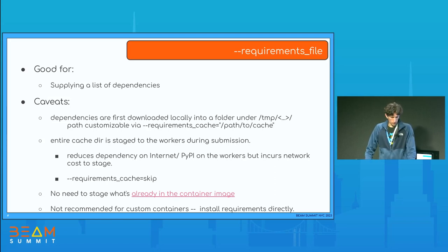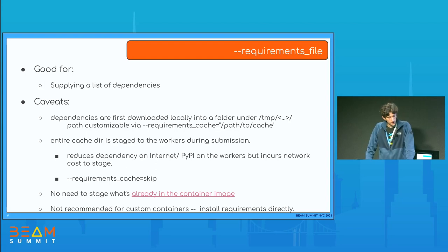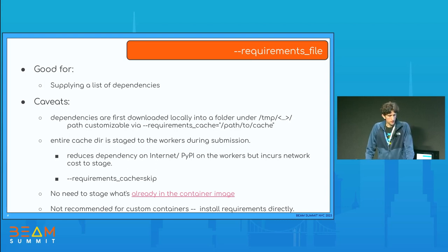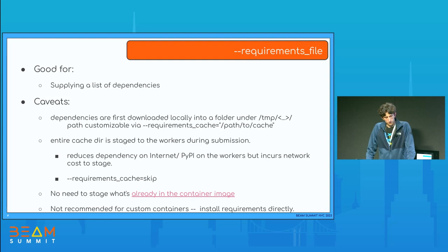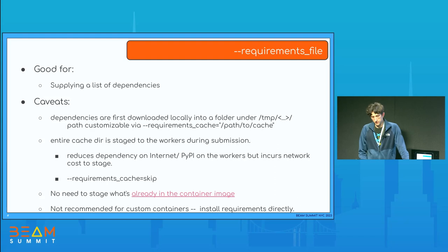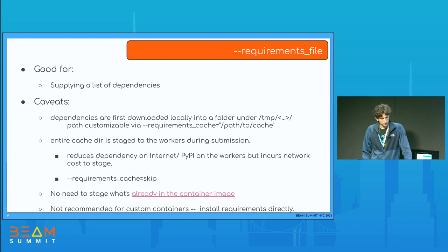There is a cost of staging dependencies from your launch environment — you will be uploading libraries, which may be large. For example, TensorFlow can be as much as 500 megabytes. If you don't like that, you can specify to skip the requirements cache, in which case we will just stage the requirements file but won't stage the dependencies. You can also check what the default container image already has, and the packages inside the container image don't need to be staged. We publish this for Dataflow worker containers and for Beam SDK containers in the repo, available for every Beam release.